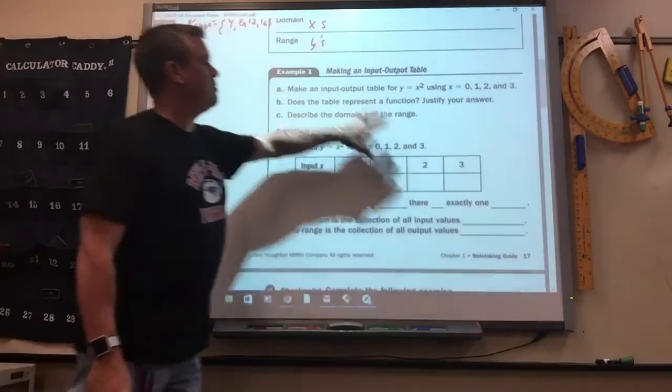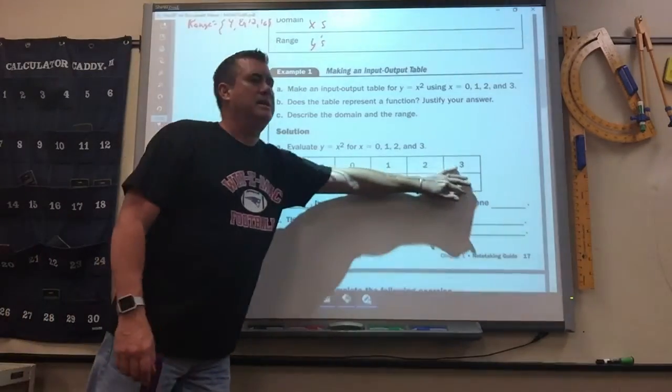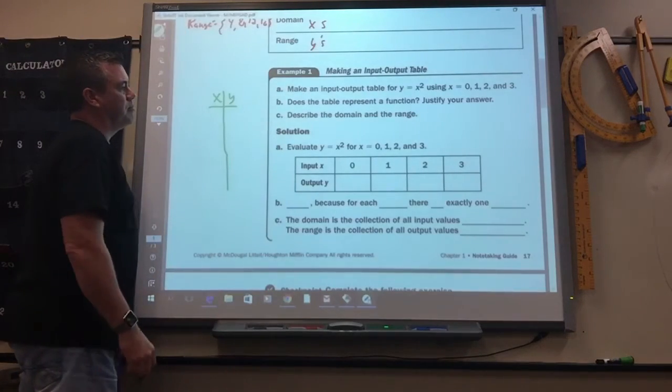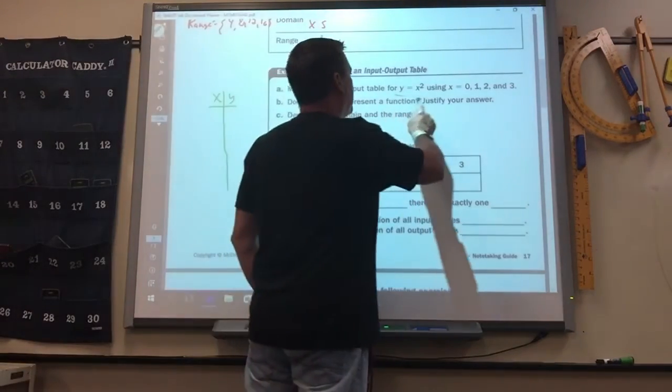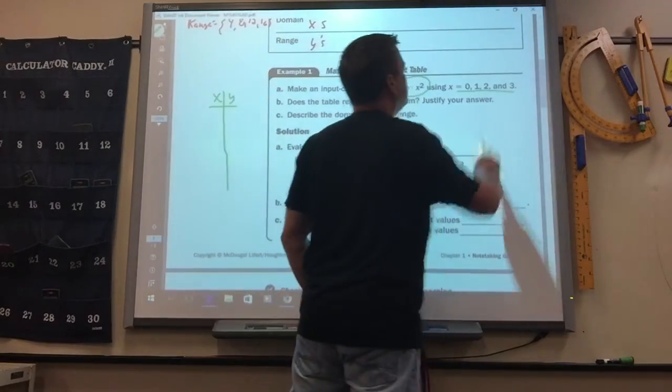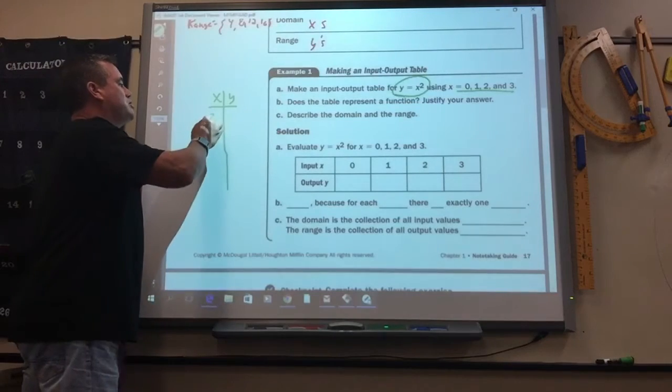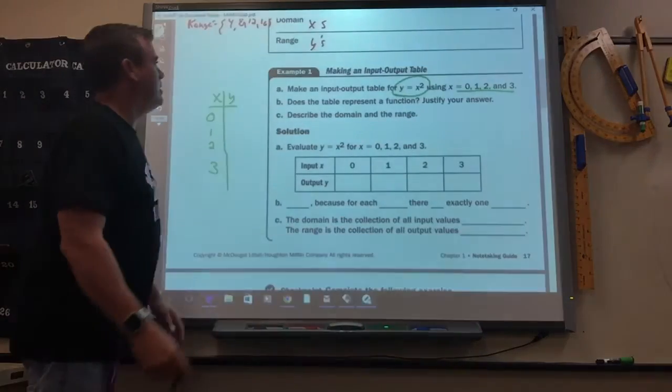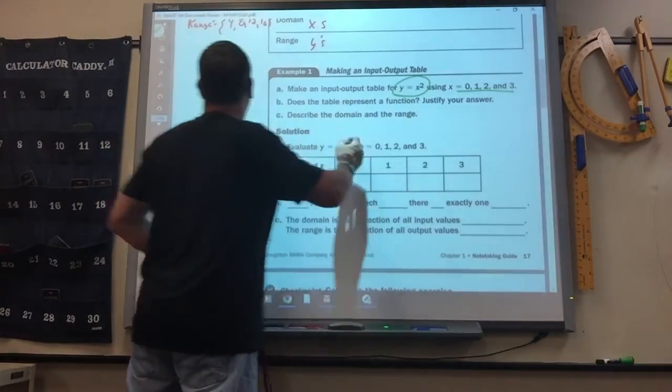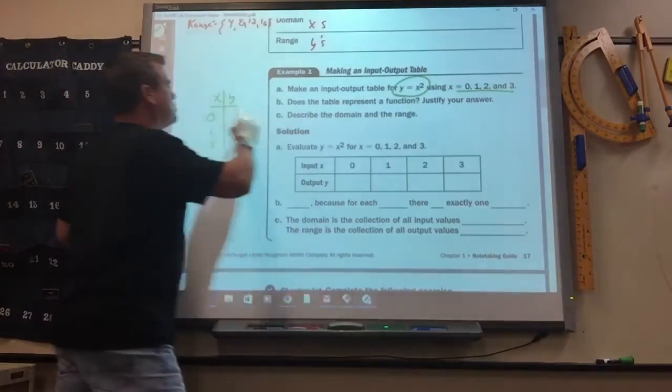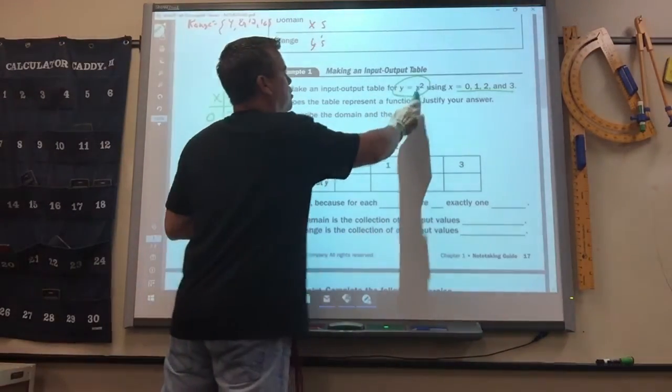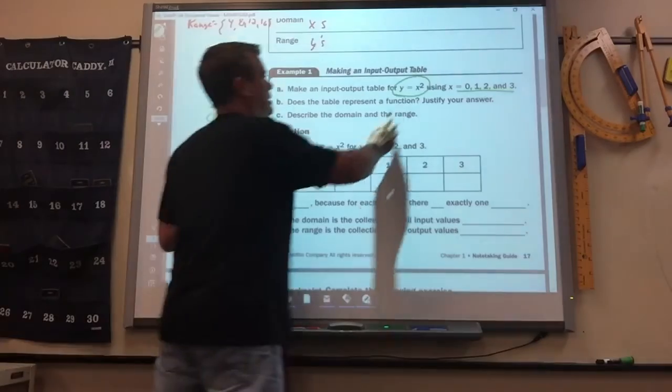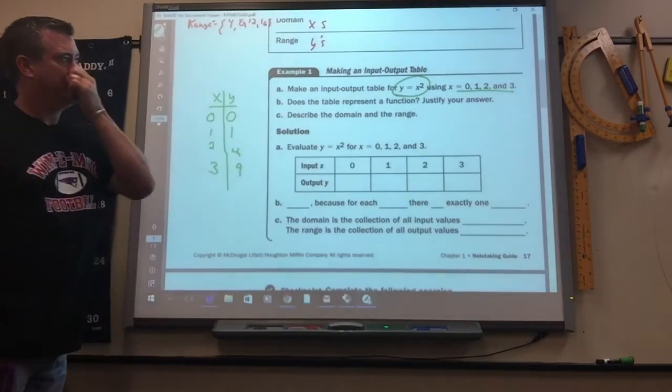So making an input-output table. In the book, they do it sideways. You can do it sideways if you want, or you can do it, to me, I like it better this way, but it doesn't matter. So make an input-output table for this equation using this as your domain. So that means you're going to put in zero, one, two, and three. So they tell you what to plug in. So when we put it in, if I put zero in here, zero squared is zero, so y is zero. One squared is one. Two squared is four. Three squared is nine.